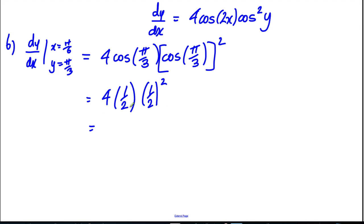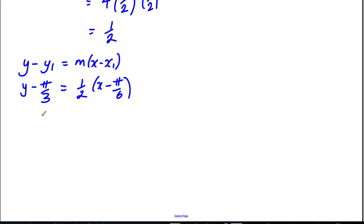So we've got 4 times a half multiplied by a quarter which is a half. So then we're going to use y minus y₁ is m times x minus x₁. So we're going to do y minus π/3 is going to be equal to a half times x minus π/6. So we're going to say y minus π/3 is going to be equal to a half x minus π/12.